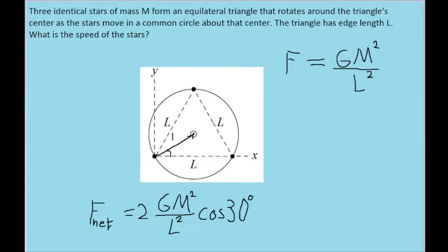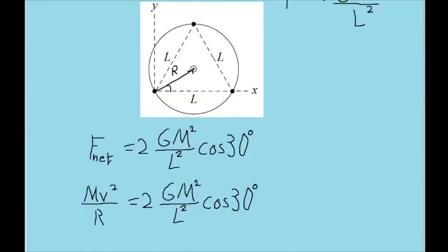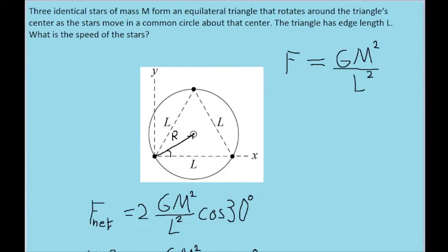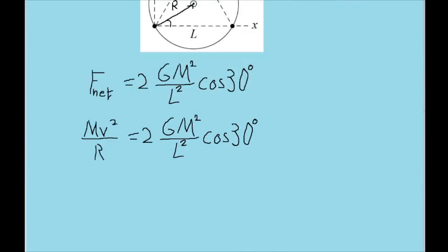Now, first off, I'm going to label that distance from the central point to the star as capital R, since that's the common variable to use. And down here, I have set those two equations equal to one another. Now, already, this is pretty close to what we want. We now have an equation that contains M and L, the two given variables, and V, the variable we want to solve for, since we're looking for the speed that the stars need to be at. The only variable here that's still out of place is the capital R, since it's not provided to us and we don't have an exact value for it yet.